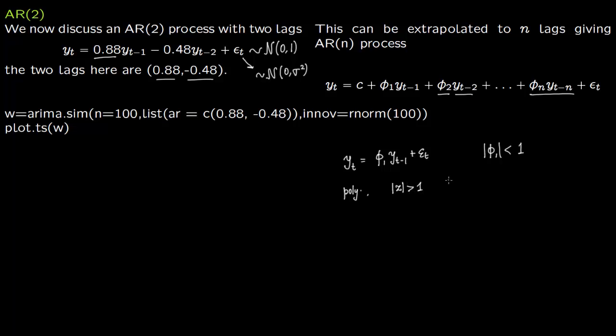In this case instead of 0.88 I could have taken 1.5, whereas in the first case you cannot take this more than 1. You cannot take anything greater than 1 because that will not make any sense. The process will go to plus infinity or minus infinity and you cannot predict anything.